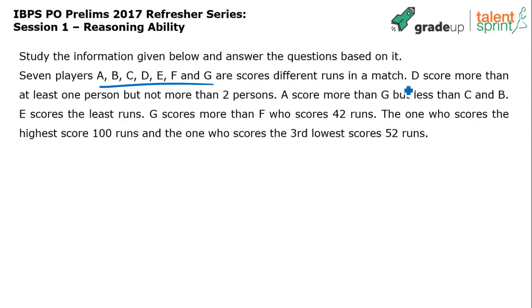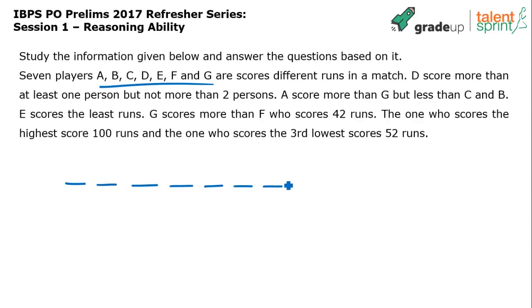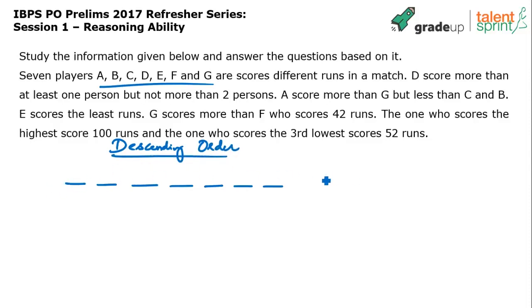We have to arrange these seven persons based on their scores. Let's arrange them in order — ascending or descending. So the seven positions are one through seven. Let's take descending order: highest first and lowest at the end. This end will be highest and this end is going to be the lowest.